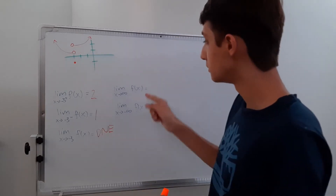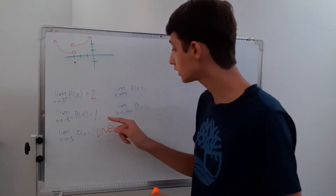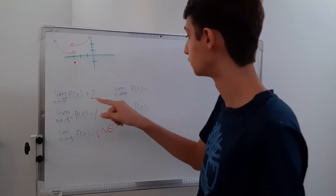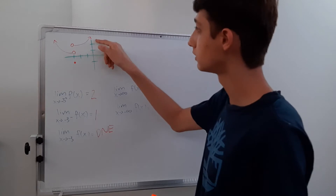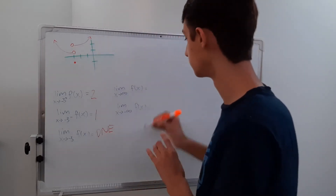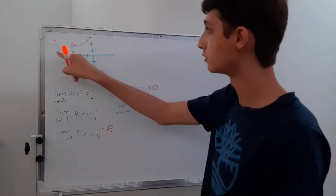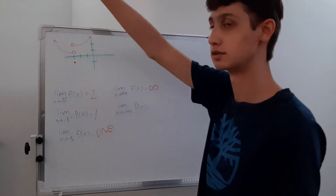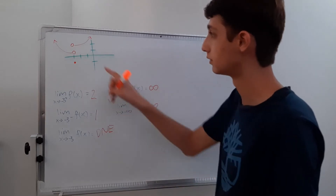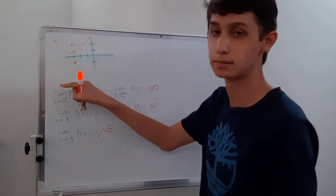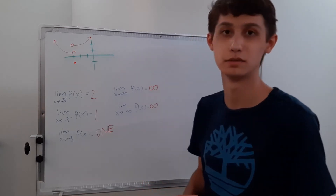The limit does not exist because those two are not continuous. Now the limit as x approaches infinity — if we go to infinity here, which is this way, this keeps going that way, so it goes to infinity. And then as x approaches negative infinity, this also goes that way, so it's going to be also infinity. If this graph went downwards and kept going, the answer would be negative infinity, but this is pretty simple.